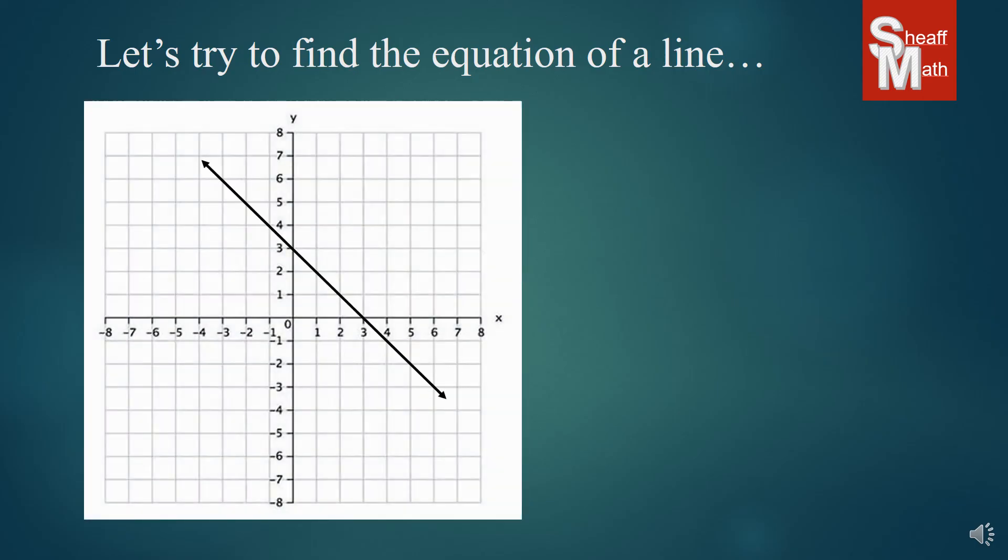Now our next line. This one has a y-intercept of 3. And our slope, I'm going to pick two points. This one's pretty easy. This one is going down 1 over 1, which turns out to be negative 1.